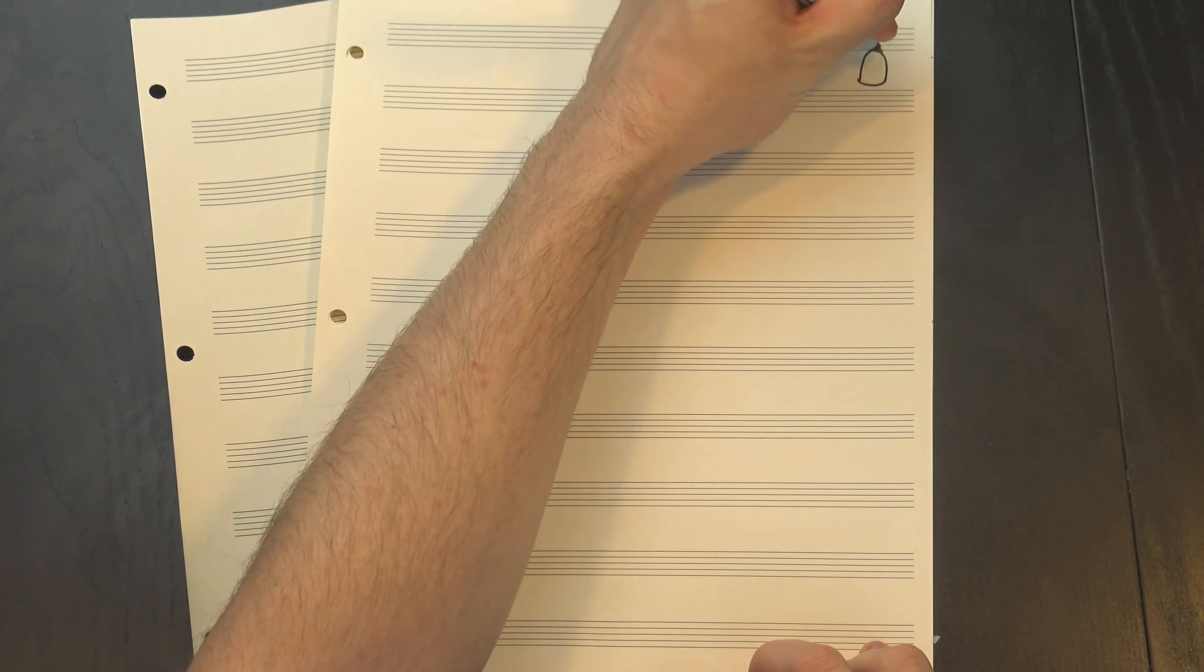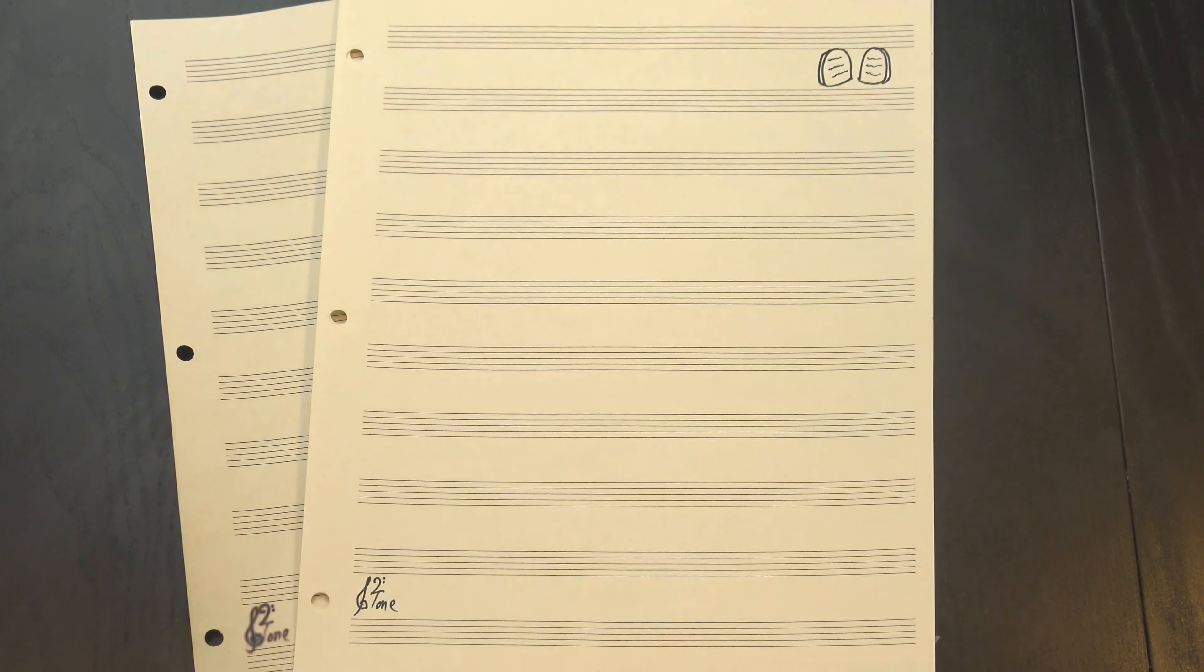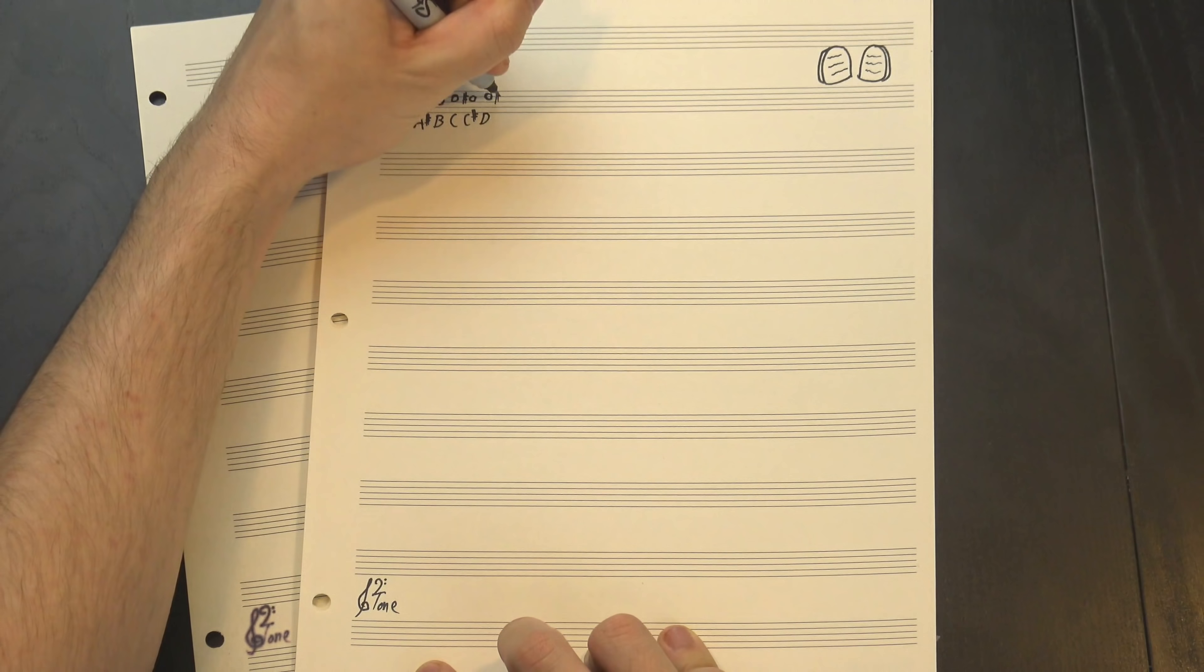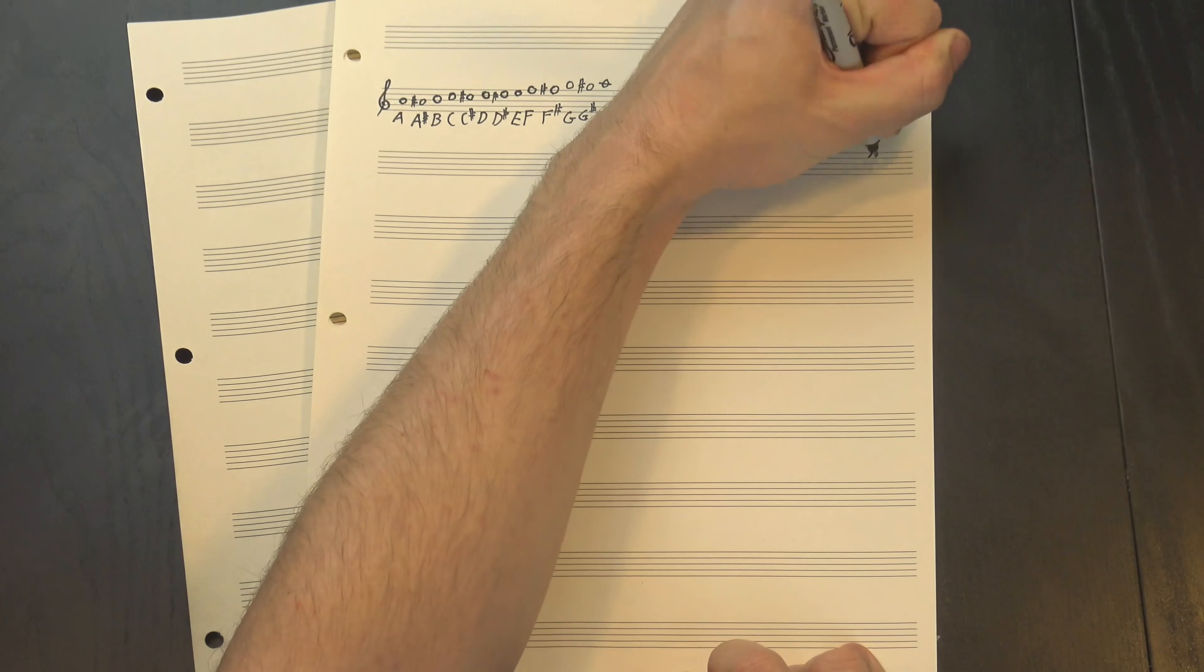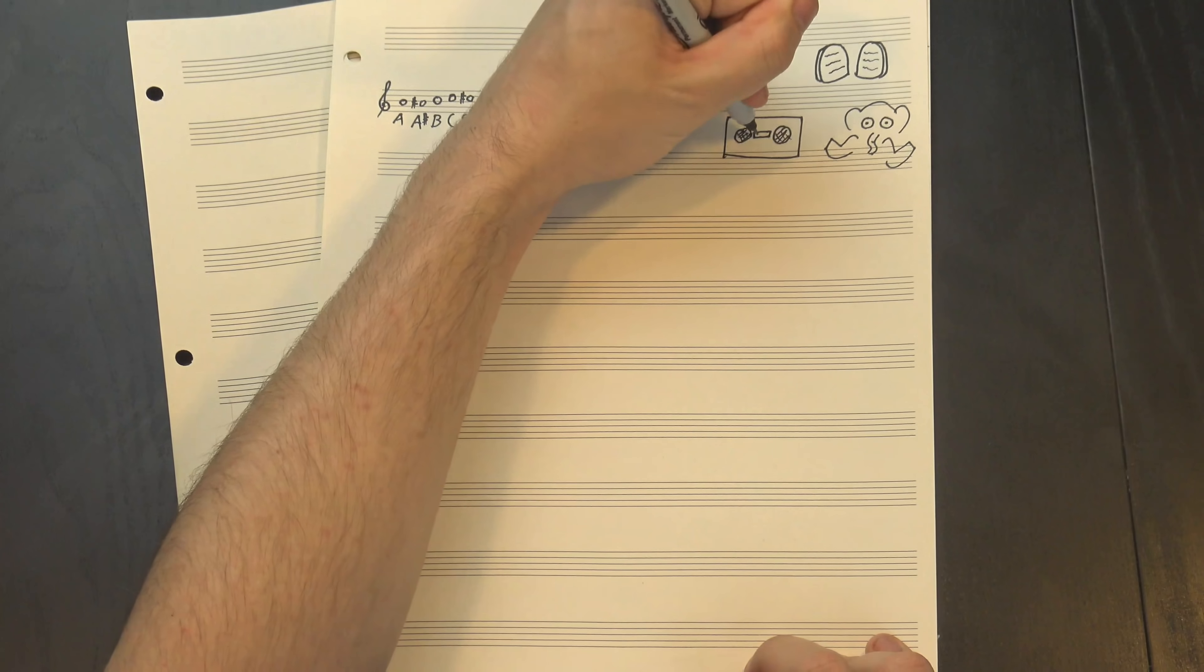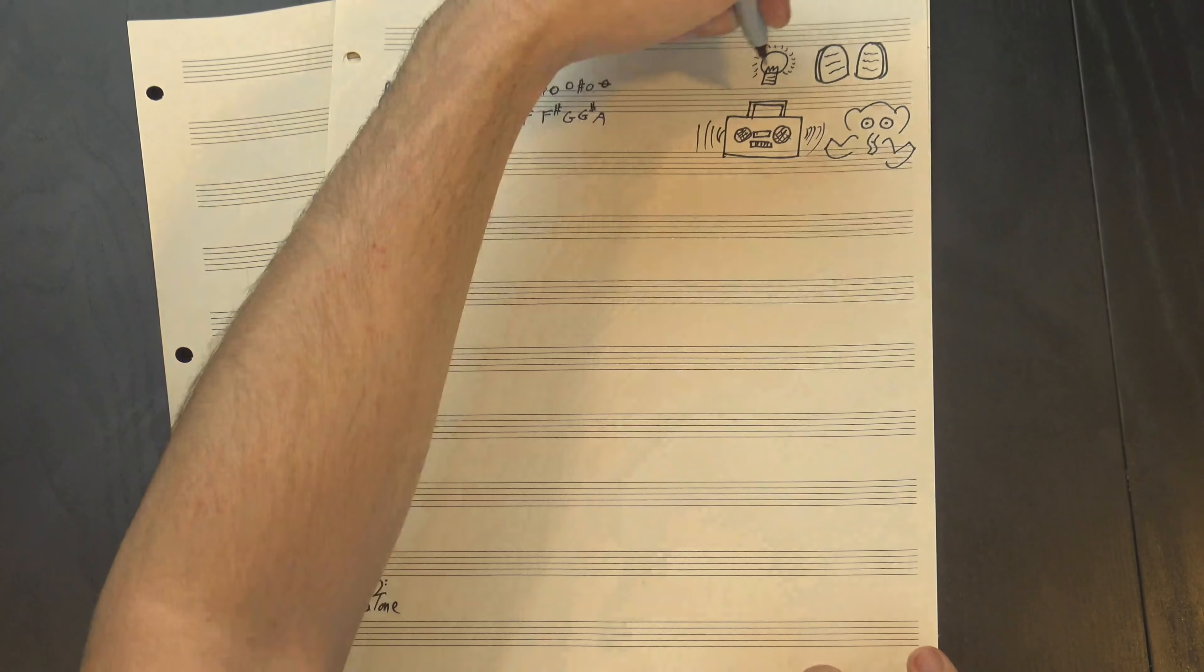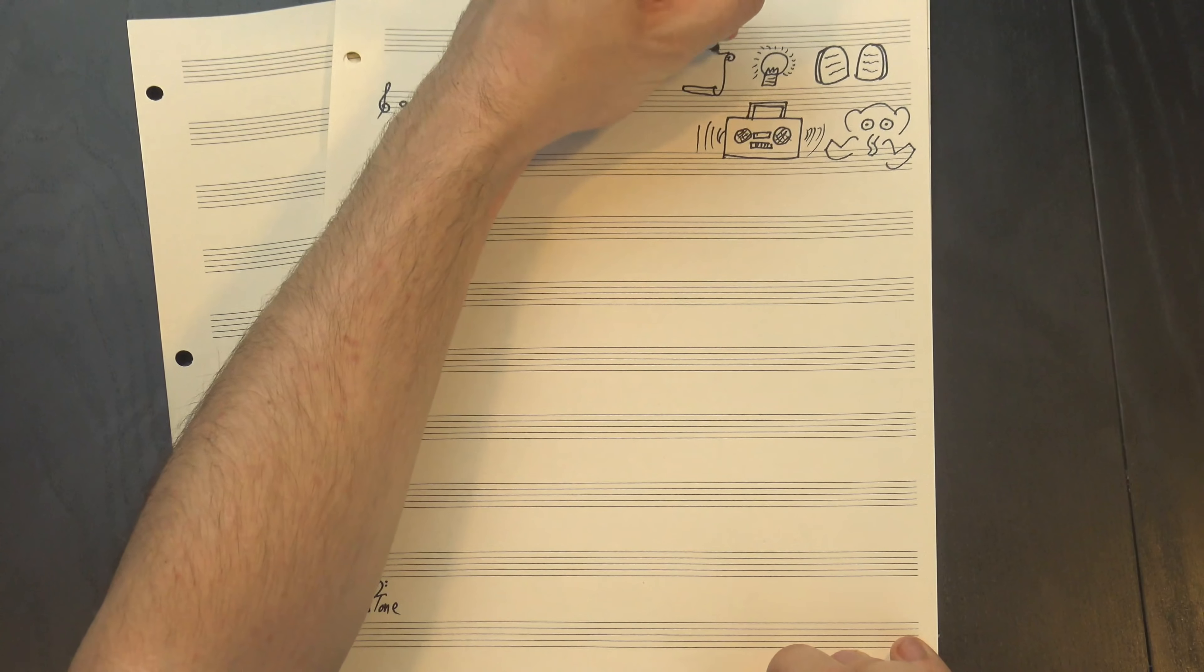Hey, welcome to 12tone! It's often tempting to think that the notes we use are set in stone. We divide the octave into 12 steps, each the same distance wide. That's just how it works. Basically, every piece of music we listen to follows that same system, so it makes sense that we'd start to see it as an actual rule.